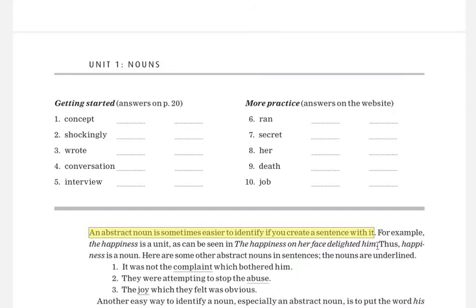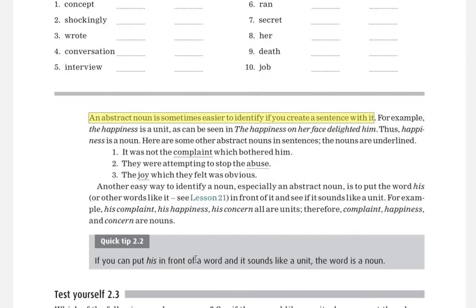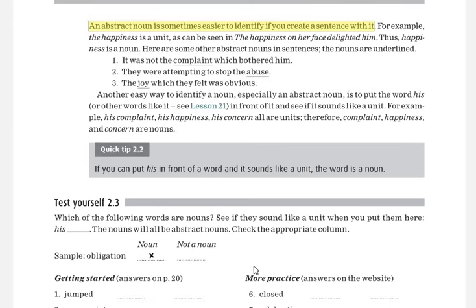Happiness is a noun. Then another tip is that if you can put 'his' in front of a word and it sounds like a unit, the word is a noun. For example, the word obligation—can we say his obligation? Yes we can, so it is a noun.